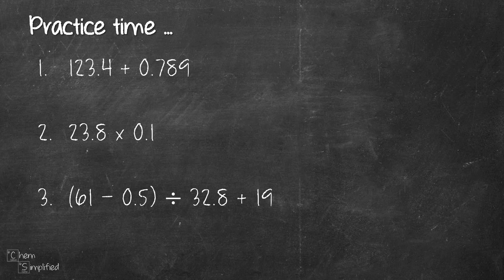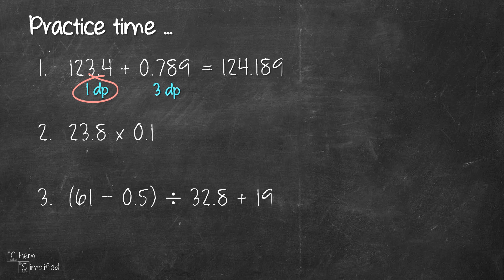Let's start with the first question. It's an addition question. For addition, the round-off rule is to follow the lowest decimal place, so we need to figure out the decimal place for each number. 123.4 has one decimal place. 0.789 has three decimal places because there are three digits after the decimal point. So our final answer will have one decimal place. When we add the two numbers together, we get 124.189. We look at the digit to the right of the tenths place, which is 8. Since 8 is 5 and above, we round up, giving us 124.2 presented in one decimal place.